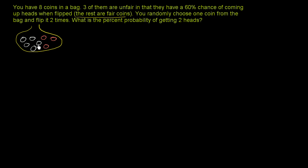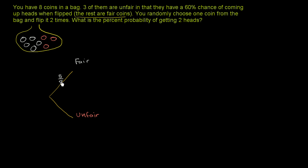We'll assume the coins all look like regular coins. So I'll draw a probability tree. There's some probability that I pick a fair coin, and some probability that I pick an unfair coin. Five out of eight coins are fair, so there is a 5/8 probability of picking a fair coin. And there is a 3 out of 8 chance that I pick an unfair coin. You can convert those to decimals or percentages as you like.